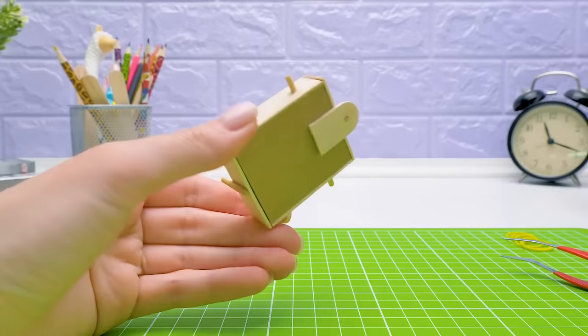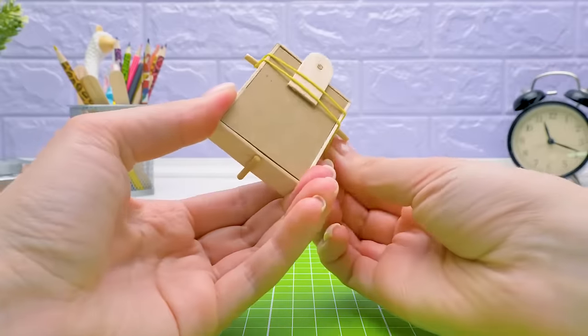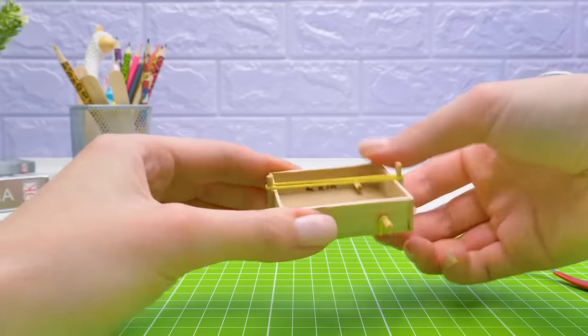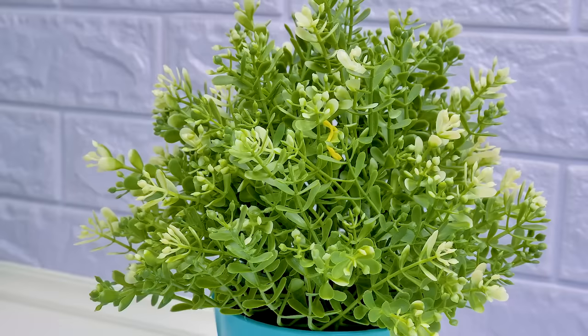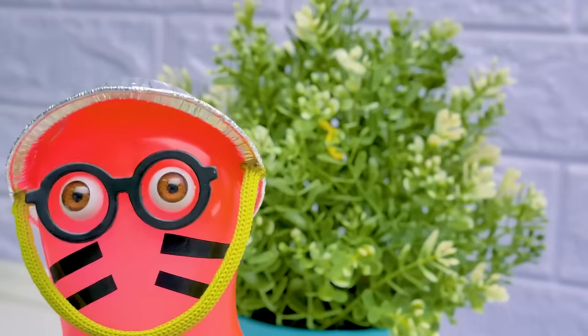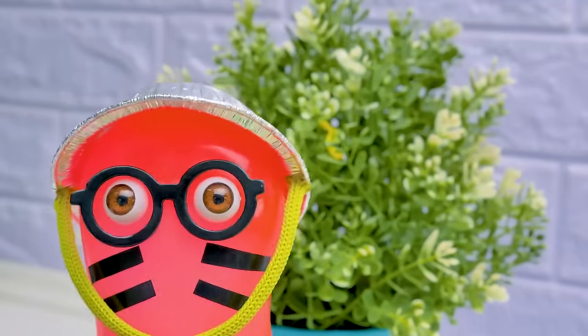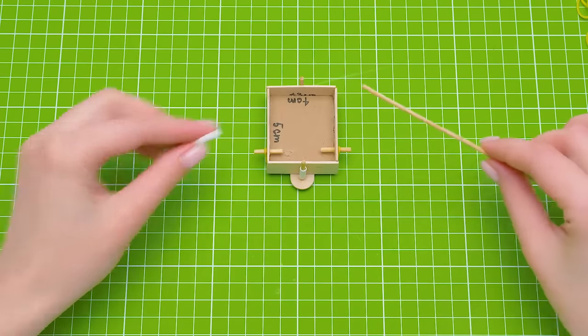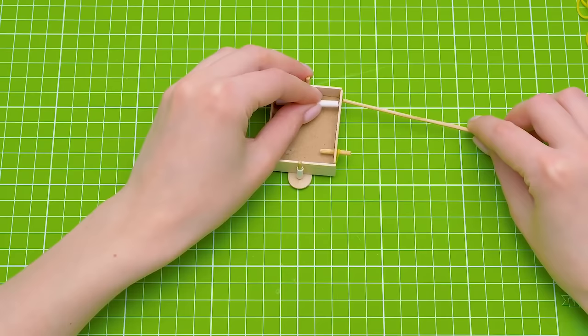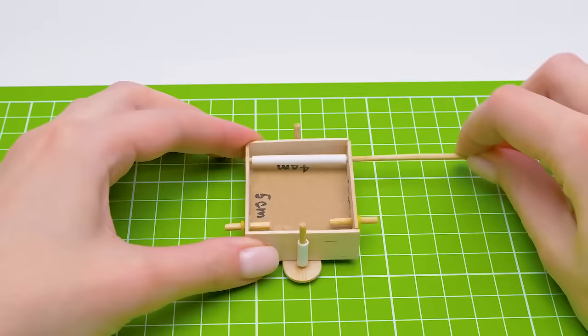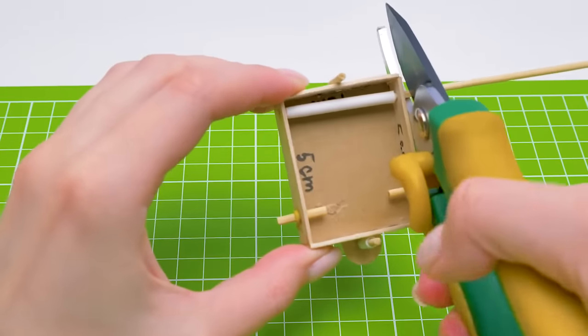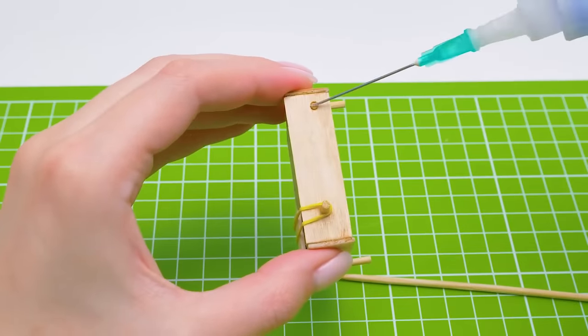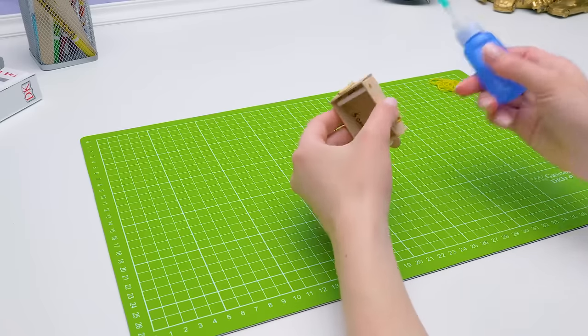And now the rubber bands. One. Two. And three. Well, well, well. Something serious is coming. We will need one straw piece and barbecue skewers. Inserting the skewer here. And cutting off the excess. And securing it with glue right here. I need to hurry before Sam's back.